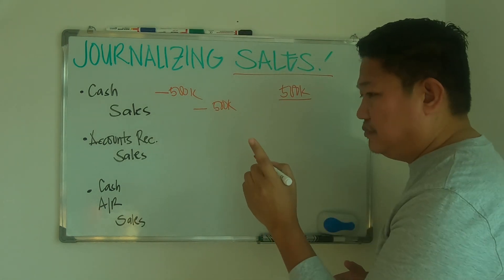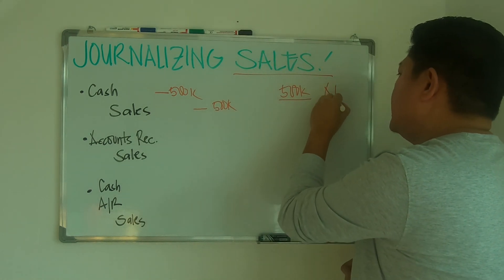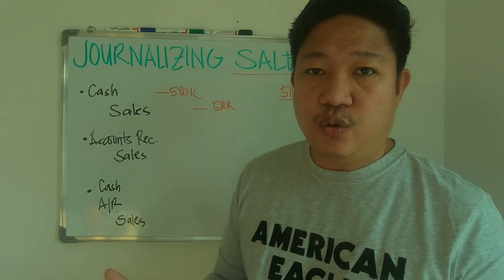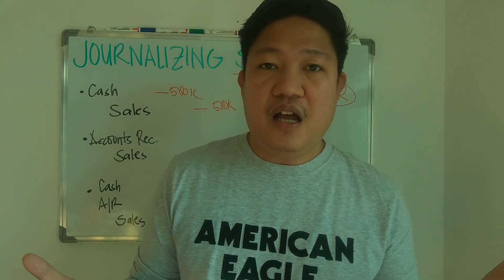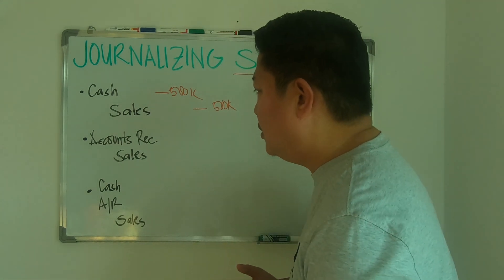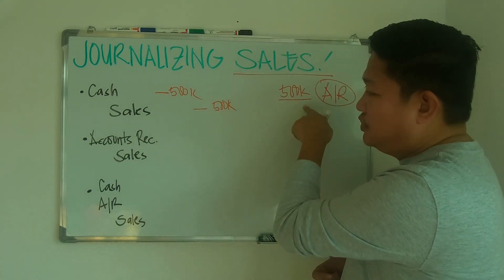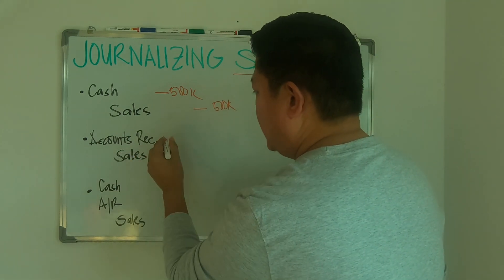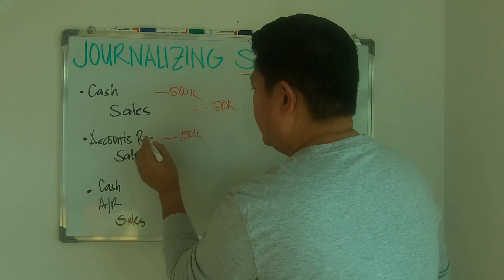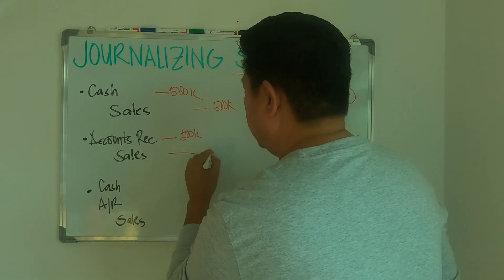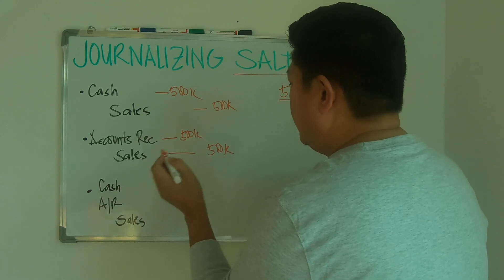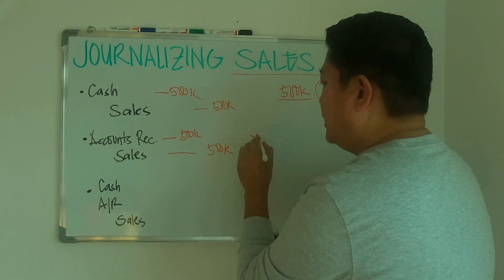Now, to give favorable terms to your customer, sometimes you allow them a credit term — for example, 30 days or 60 days based on your agreement. So if it is sold on account, you have to record it temporarily as: accounts receivable debit 500,000 and sales credit 500,000.